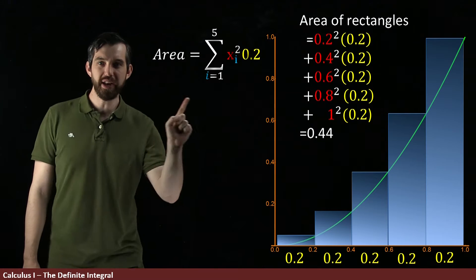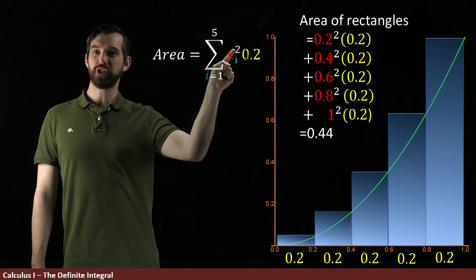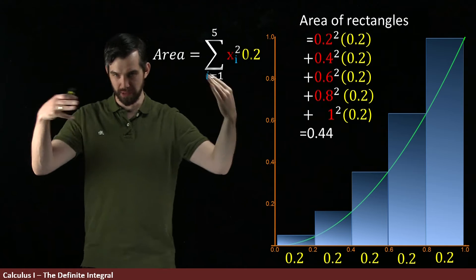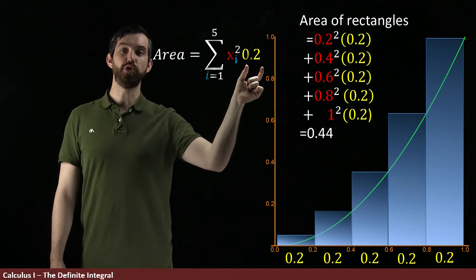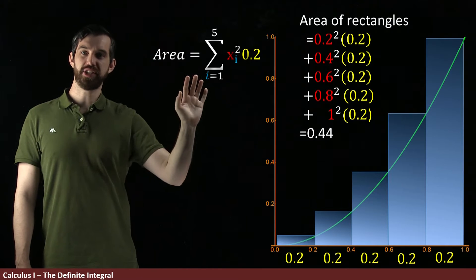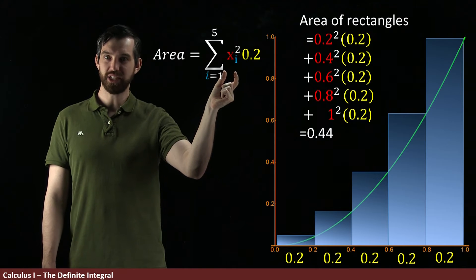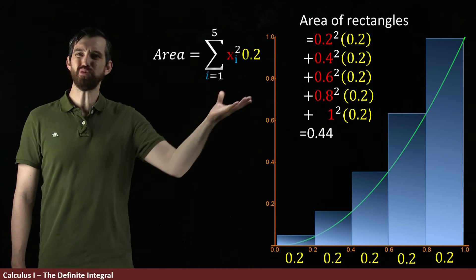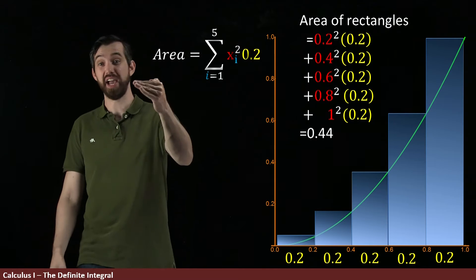The way I write it is the sum from 1 to 5 of xi squared — that's the 0.2 squared, the 0.4 squared, the 0.6 squared — multiplied by the width 0.2. In other words, this area is the sum of the areas of rectangles, where each rectangle has a height xi squared and a width of 0.2. This really just means the sum of the areas of rectangles that have a height and a width.